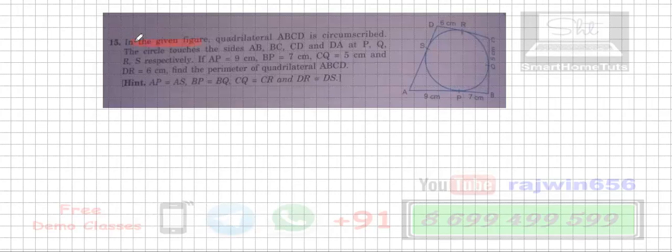Question 15: In the given figure, quadrilateral ABCD is circumscribed. This is the circle here. The circle touches all four sides at P, Q, R, S respectively. AP is 9, this is 9. Then BP is 7, so this is 7. Then CQ is 5, this is 5 centimeters.